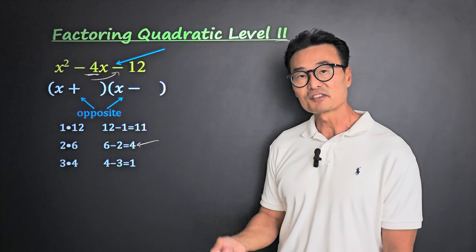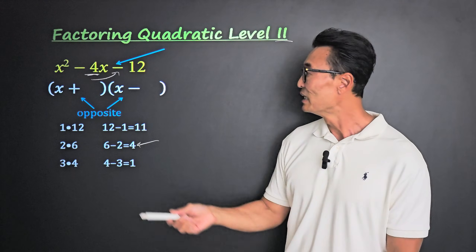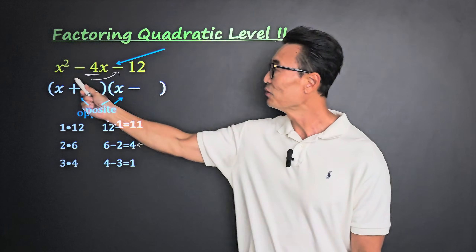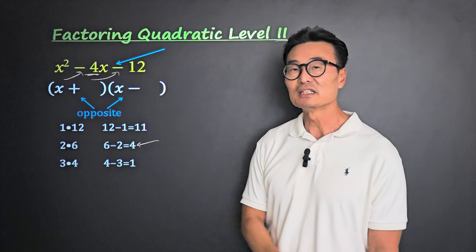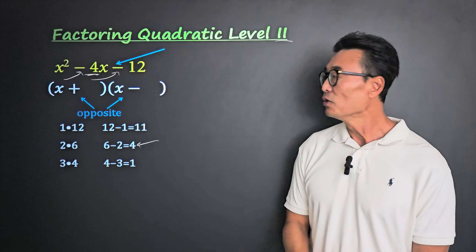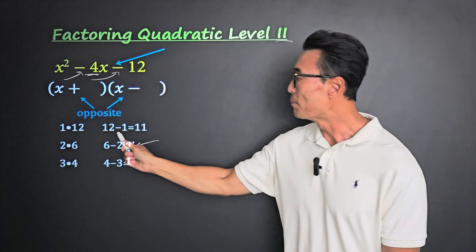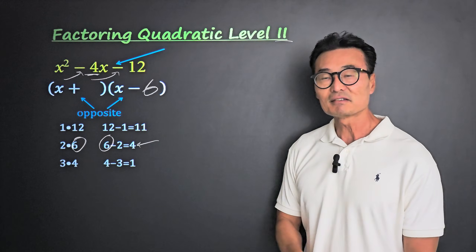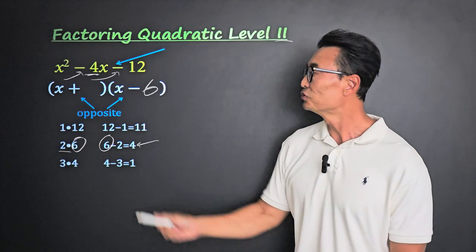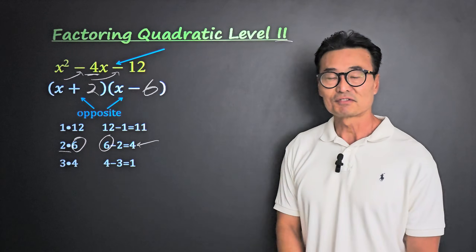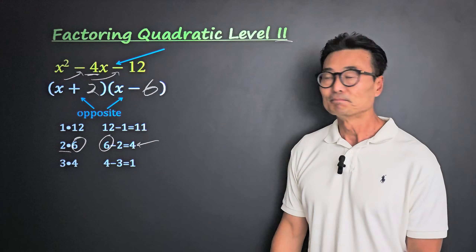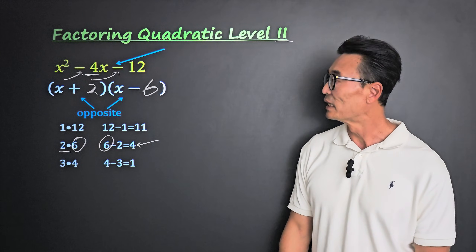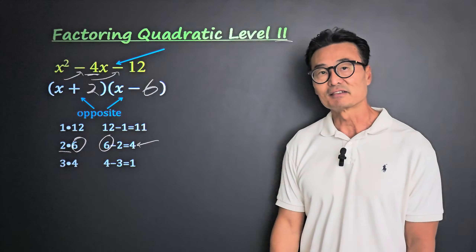Here it's important where the 6 goes — you can't just put 6 anywhere. You have to think about the sign in the middle. In this case it's negative, which means we take the bigger number, the 6, where the negative is, and put the other number, the 2, where the positive sign is. So the answer is x plus 2 times x minus 6.